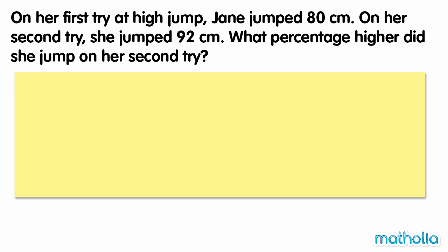On her first try at high jump, Jane jumped 80 centimeters. On her second try, she jumped 92 centimeters. What percentage higher did she jump on her second try? 92 minus 80 equals 12. Jane jumped 12 centimeters higher on her second jump.